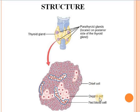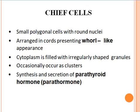These cells are also embedded with pools of red blood cells. Chief cells are small polygonal cells with round nuclei. These are arranged in cords and present a whorl-like appearance. The cytoplasm of chief cells is filled with irregularly shaped granules, and these are occasionally present as clusters. Chief cells are responsible for the synthesis and secretion of parathyroid hormone.